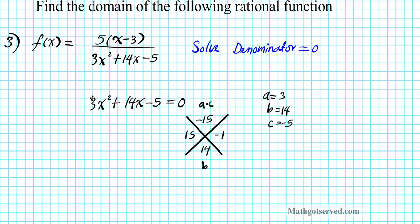This quadratic has a value of a that's not 1, so we cannot take any shortcuts here. We actually have to factor this expression by grouping. We're going to have 3x squared, and the two terms from our x-game — positive 15x minus x — replace 14x, giving us 3x squared plus 15x minus x minus 5 equals 0. These two numbers combine to give positive 14, so we haven't changed the problem.